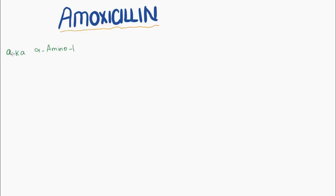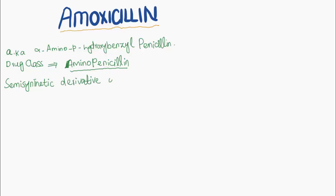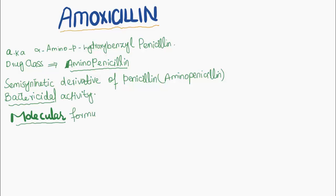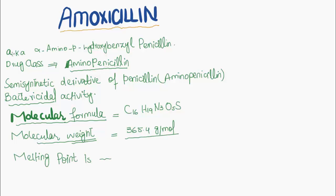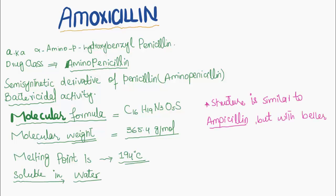Today our topic of discussion is amoxicillin, also known as alpha-amino-beta-hydroxybenzyl penicillin. Its drug class is aminopenicillin. It is a semi-synthetic derivative of penicillin with bactericidal activity. Molecular formula is C16H19N3O5S, molecular weight is 365.4 grams per mole. Its melting point is 194 degrees Celsius, and it is soluble in water. Its structure is similar to ampicillin.